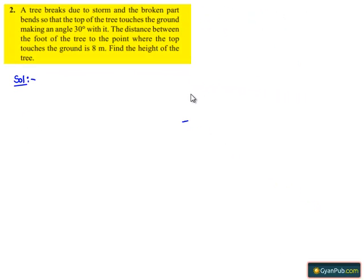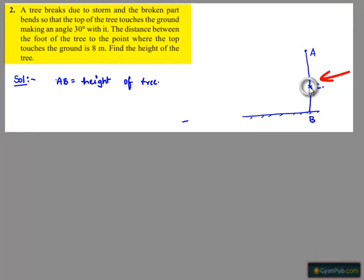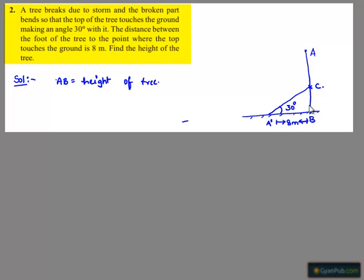Now moving on to the solution. Let us consider a tree whose ID is AB and draw the figure. There is the ground and tree AB. Let us assume that the tree is broken at point C, and the broken branch falls on the ground at point A', making an angle of 30 degrees with the ground. The distance between the foot of the tree to the point where the top touches the ground is given as 8 meters. What we have to find is the height of the tree, that is AB.